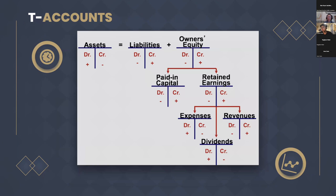Now that we've talked about double entry, let's talk about T-accounts. If you've taken any accounting or finance classes, you'll probably remember how confused you were the first time your professors put this on the board. It's not super intuitive, but it is very important. T-accounts are a fundamental tool in accounting used to visualize and track the movement of money within an account. They're called T-accounts because of their T shape — the left side always represents a debit, the right side credits. There exists a T-account for every type of account: assets, liability, equities, revenue, and expenses.